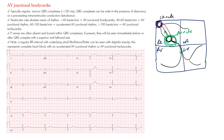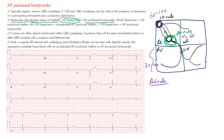What differentiates the different types of AV junctional rhythms is the ventricular rate — the ventricular rate dictates the name of the rhythm. AV junctional bradycardia is when we have a rate of less than 40 beats per minute. Remember, each area in the heart has an intrinsic rate: in the sinus node it's 60–100 bpm for adults, in the AV node it's 40–60 bpm, and down in the ventricles it's 20–40 bpm.